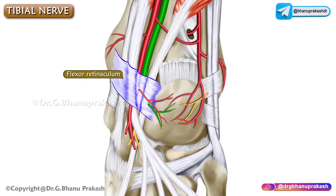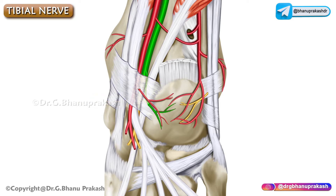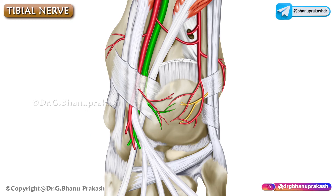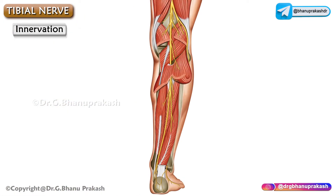Just above the flexor retinaculum, the tibial nerve gives off medial calcaneal branches. It finally terminates deep to the flexor retinaculum by dividing into the medial as well as lateral plantar nerves.